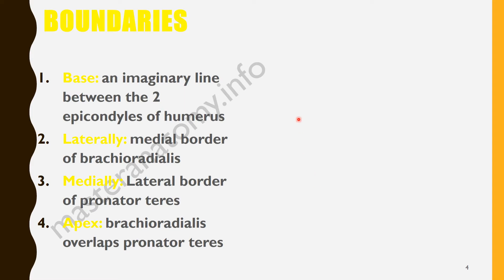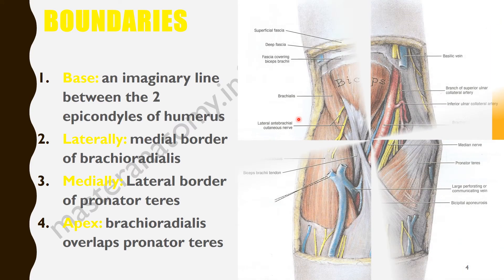It has a base, it has an apex, it also has a roof, a floor, and it has medial and lateral sides. The base is an imaginary line between the two epicondyles of the humerus.